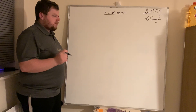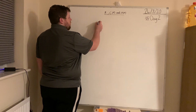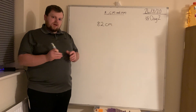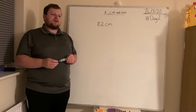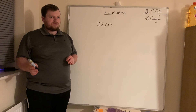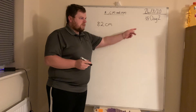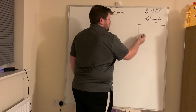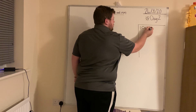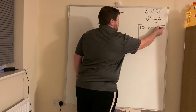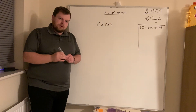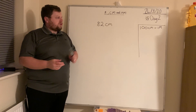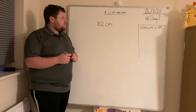Let's start with centimeters. If I had 82 centimeters and I wanted to put it in meters — which is a bigger measurement — we need to think: how many centimeters are in a meter? This is a key rule, so I'm going to write it in a rule box. What we need to remember is that 100 centimeters equals one meter.